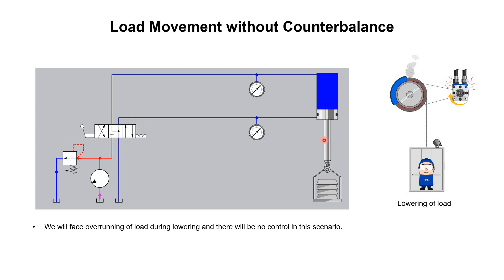But when we are lowering this load, we have the same overrunning problem. When fluid enters the above side of the cylinder, due to gravity — assume this weight creates an extra 100 psi of pressure — we will again face overrunning. The load will move in an uncontrolled manner. For example, if the hydraulic circuit is supplying 50 psi but the load adds 100 psi extra, we effectively have 150 psi on the above side, and the load will move with a higher, uncontrolled speed.